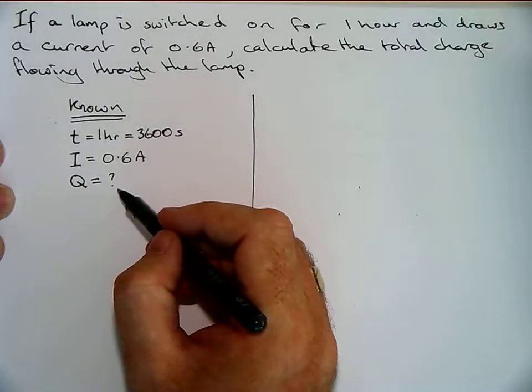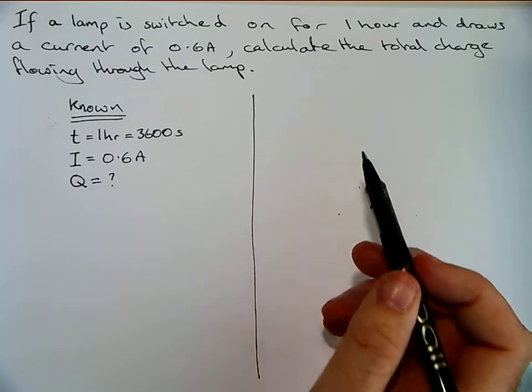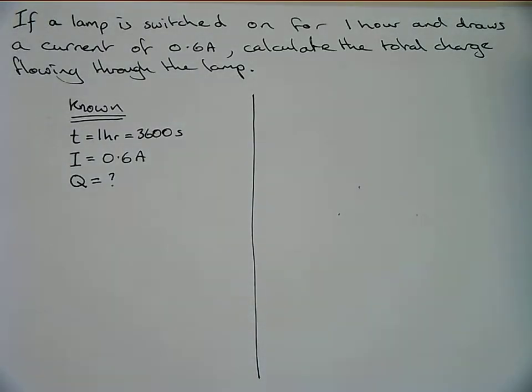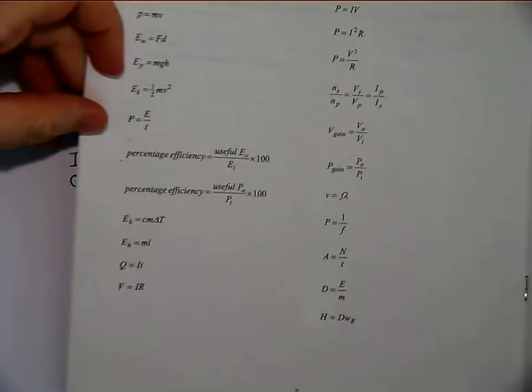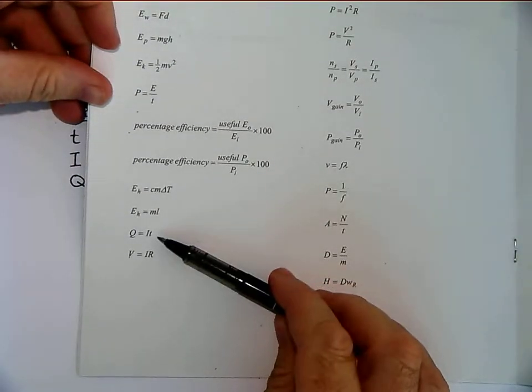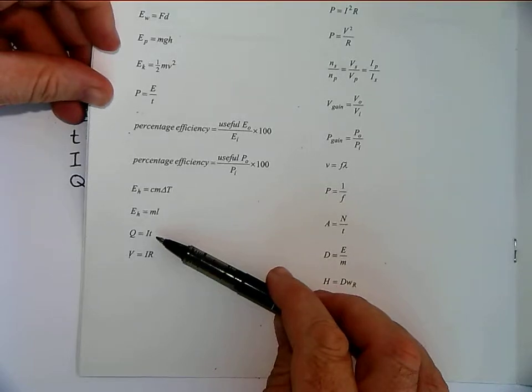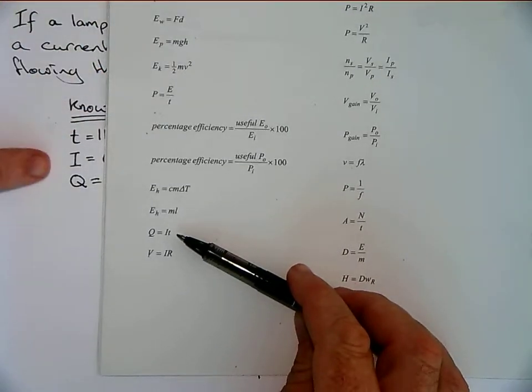So now we've got the known information, and now of course we can go on to solving the problem. What we do is we usually look up the equation if we don't know it already. We have an equation sheet here, and we've got one equation with Q, I and T in it, which is the one we're after.